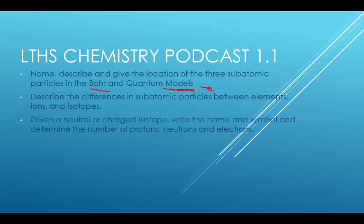We're going to name, describe, and give the location of the three subatomic particles in the Bohr and quantum models - protons, neutrons, and electrons. Describe the differences in subatomic particles between elements, ions, and isotopes.